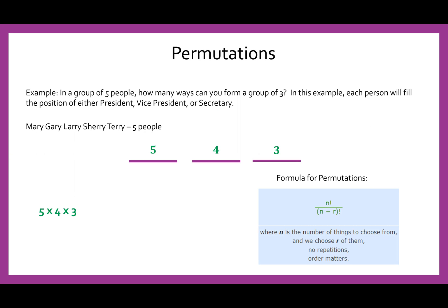Again, n is the total number of things to choose from. R is the number of things we are choosing. So we have five people, Mary, Gary, Larry, Sherry, and Terry, and we want to choose three of them to fill these spots. So five factorial over five minus three factorial. Again, the easy math is that five minus three is two. And we know how to simplify this. So five factorial over two factorial is going to give us 60.